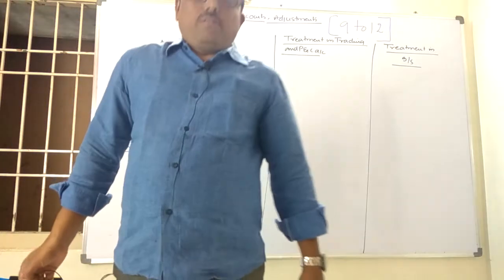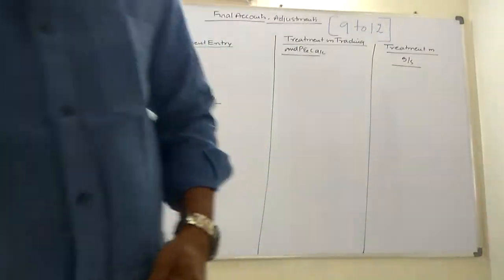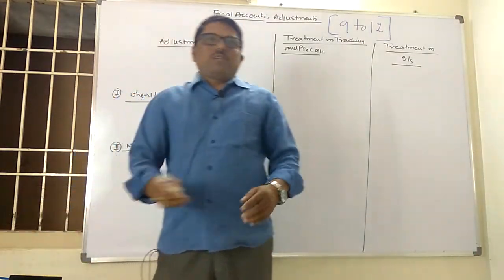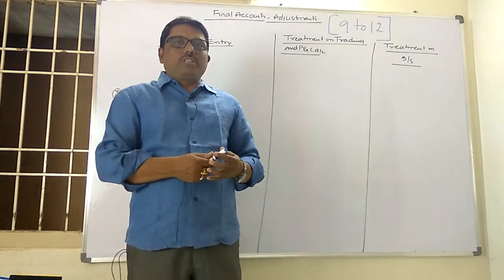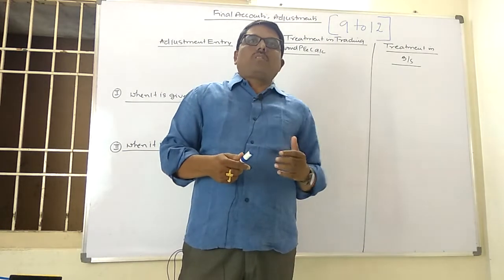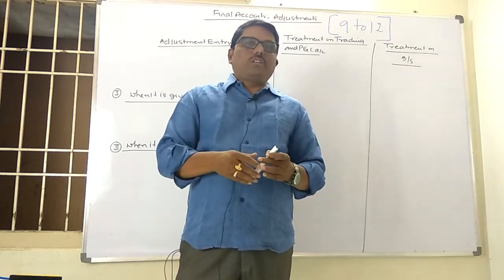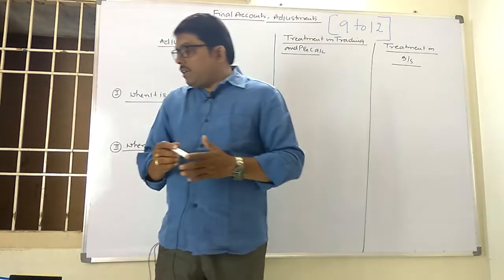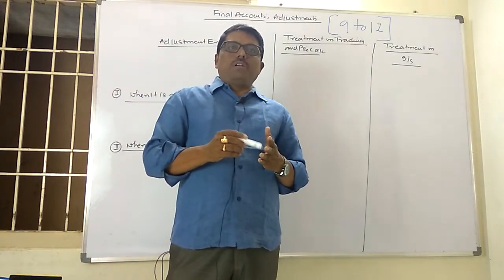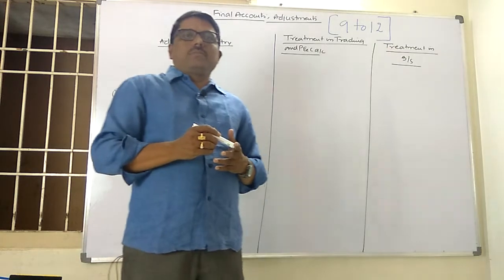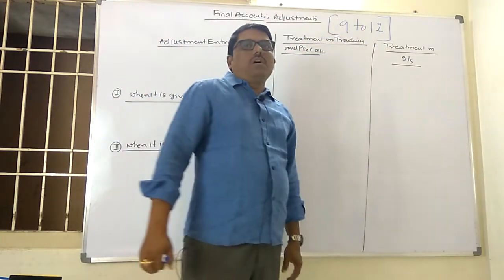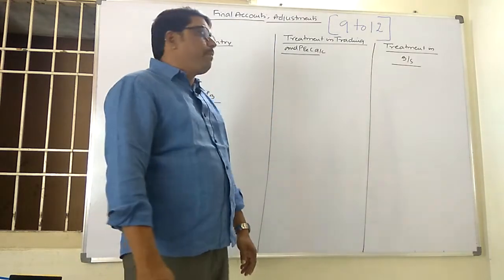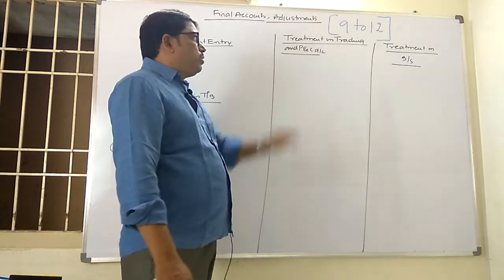Hello friends, welcome to my channel. If you like my videos please subscribe and share with your friends. Today we are going to discuss another four adjustments in final accounts. In the beginning class we discussed four adjustments: outstanding expense, prepaid expense, accrued income, and advance received income. Later we discussed depreciation, interest on capital, interest on drawings, and set off. Today we are going to discuss adjustments 9 to 12.